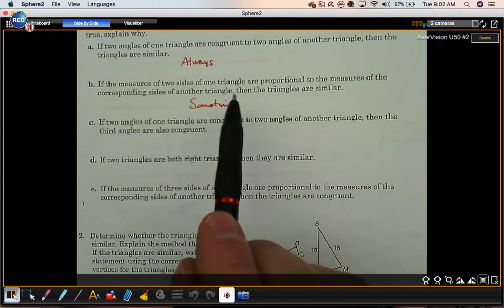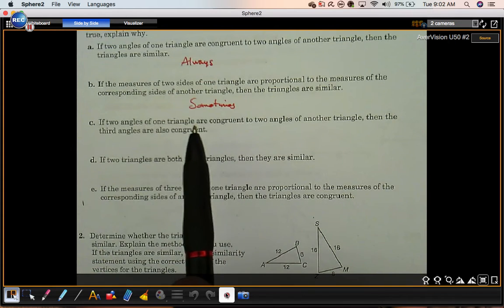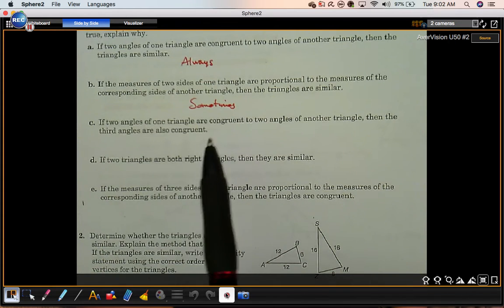If you had congruent angles in between those proportional sides, then they would be similar. That would be side-angle-side.